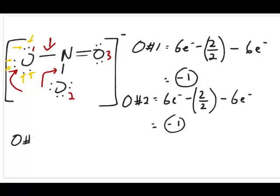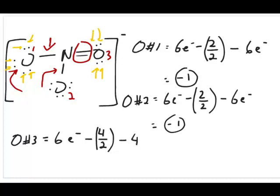For oxygen number three, the free atom also has six electrons. However, the number of bonding electrons is different here — it has two bonds, which means four electrons, so four divided by two equals two. The number of lone pair electrons is four, not six like the other two oxygens. So: six minus two minus four equals zero. The formal charge for oxygen number three is zero.